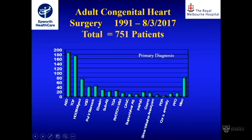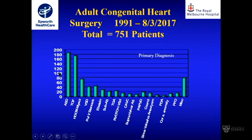We've now done 750 patients for adult congenital heart surgery at Royal Melbourne and Epworth. There are probably more than that because Marco Larabina has done quite a lot of these patients as well. The point of the slide is to show that Tetralogy of Fallot is a big group in the adult congenital heart practice. ASD used to be the biggest group, but the secundum ASDs are largely dealt with the Amplatzer. Tetralogy of Fallot is the next biggest group, nearly a quarter of the patients, and they're virtually all redo surgeries.